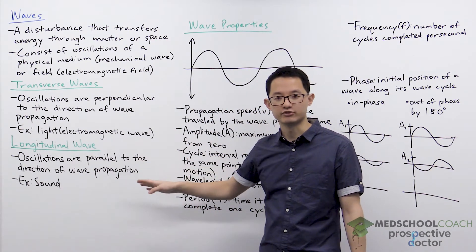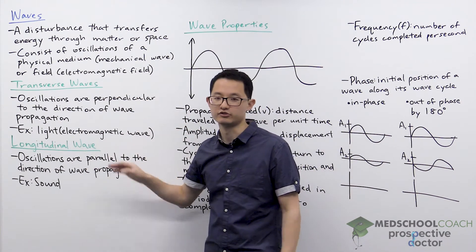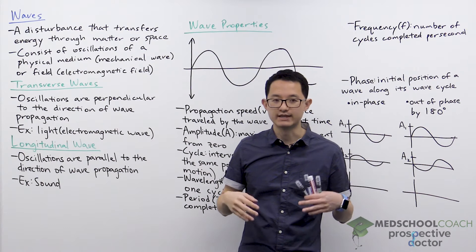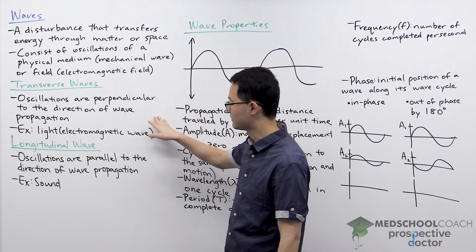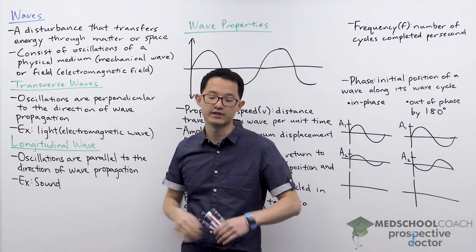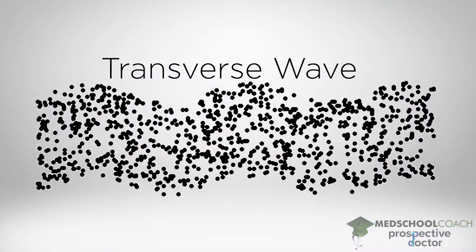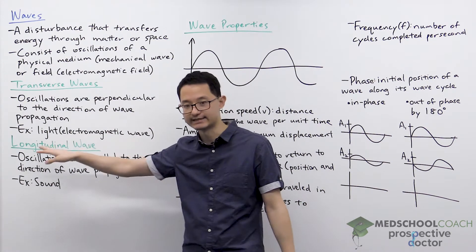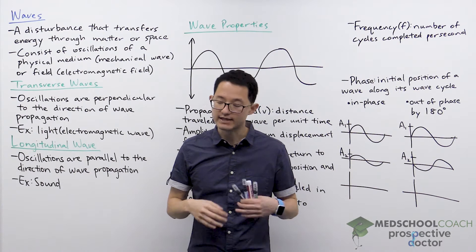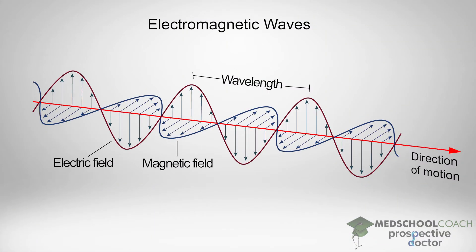For waves on the MCAT, you need to be able to classify waves as transverse waves or longitudinal waves. The main difference is the direction of their oscillations relative to their direction of wave propagation. For transverse waves, oscillations are perpendicular to the direction of wave propagation. As you can see in this diagram, the wave is traveling from left to right while oscillations go up and down — perpendicular to each other. Light is an example of a transverse wave; it's an electromagnetic wave where electric and magnetic fields oscillate perpendicular to the direction of propagation.